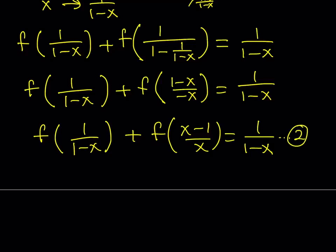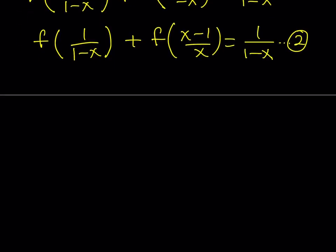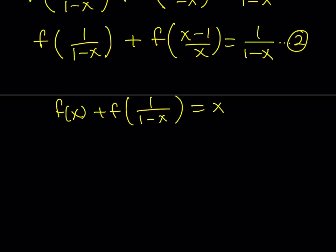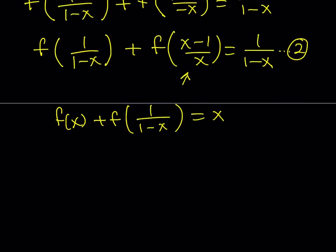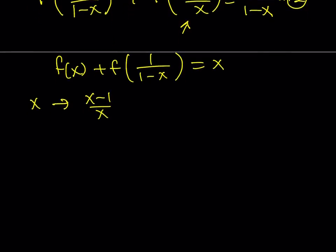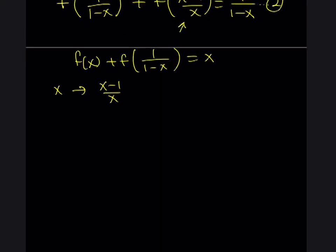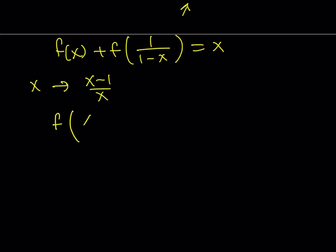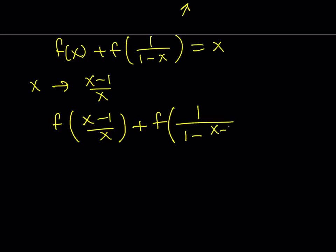We need a third equation, then we'll put it all together and solve the system. Remember our original problem: f(x) + f(1/(1-x)) = x. Notice that we got a new term, (x-1)/x, so it makes sense to replace x with that. When you do, on the left side you get f((x-1)/x) + f(1 over 1 minus (x-1)/x), and on the right side you substitute x-1 over x as well.